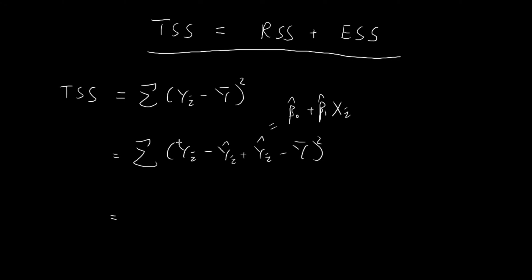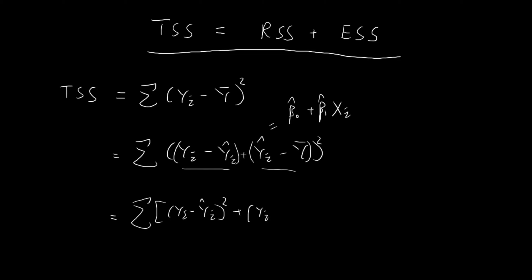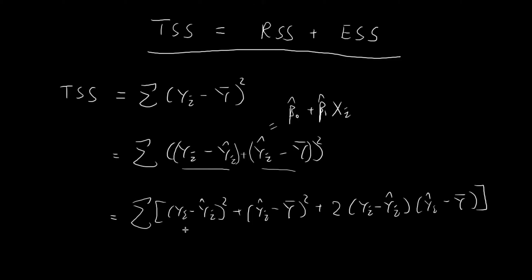Once we have this term, we can square it. I'm going to group everything into two different groups and square the entire term. Once I square this, I get (yᵢ minus ŷᵢ) squared, plus (ŷᵢ minus the sample mean of y) squared, plus two times (yᵢ minus ŷᵢ) times (ŷᵢ minus the sample mean of y). We have the sum of all these terms. Looking at the individual terms, the first term — the sum of (yᵢ minus ŷᵢ) squared — is just the residual sum of squares.